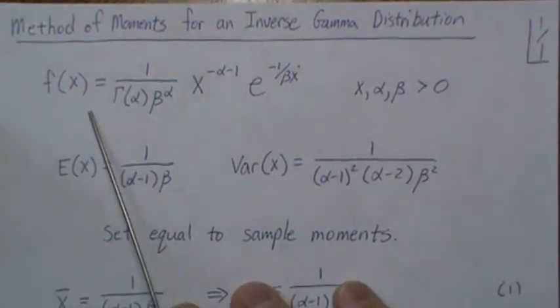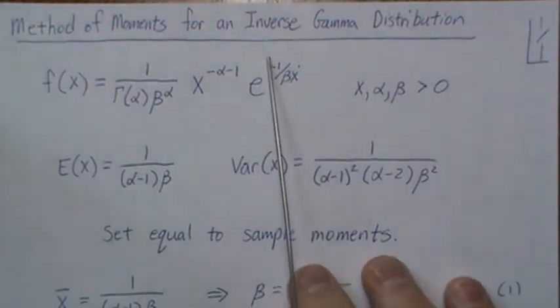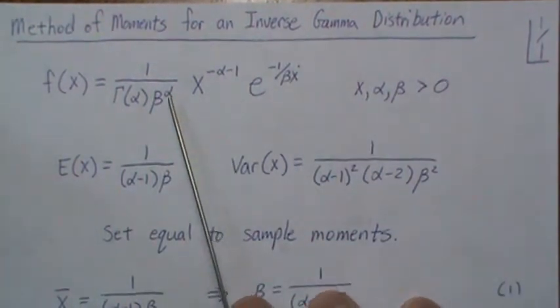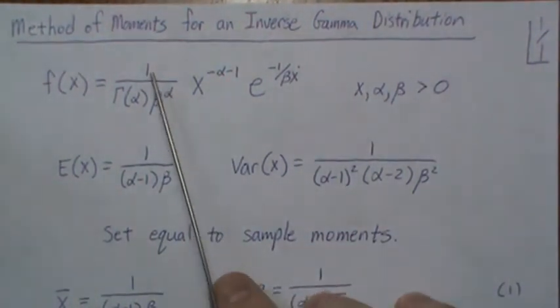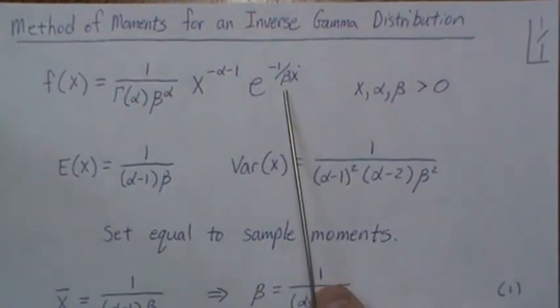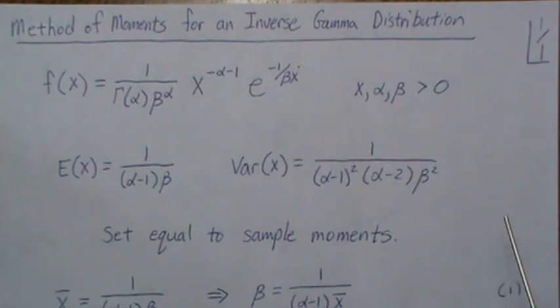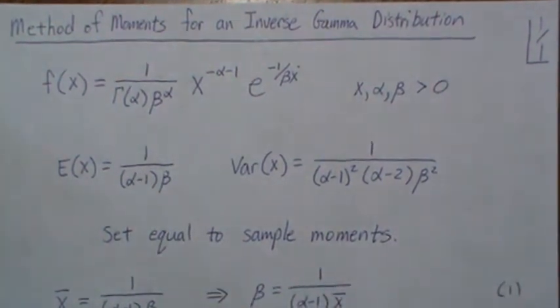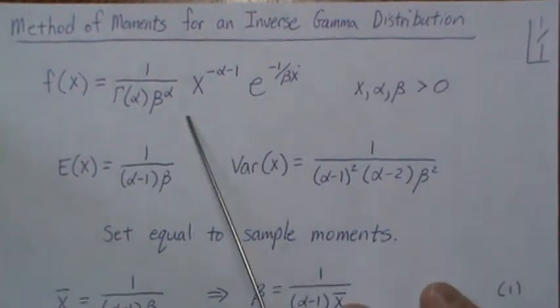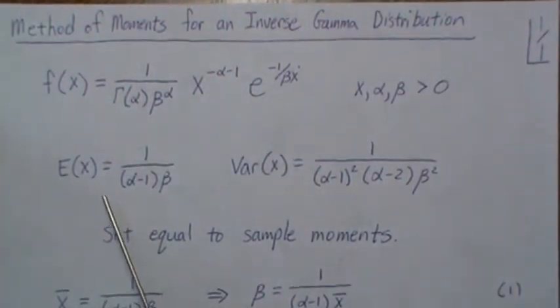So here we're going to look at the inverse gamma distribution which is this. One note is that some will write this beta parameter in the numerator, but I like it in the denominator and so that's the way I'm going to illustrate this. The formulas will be slightly different depending upon which form you use.